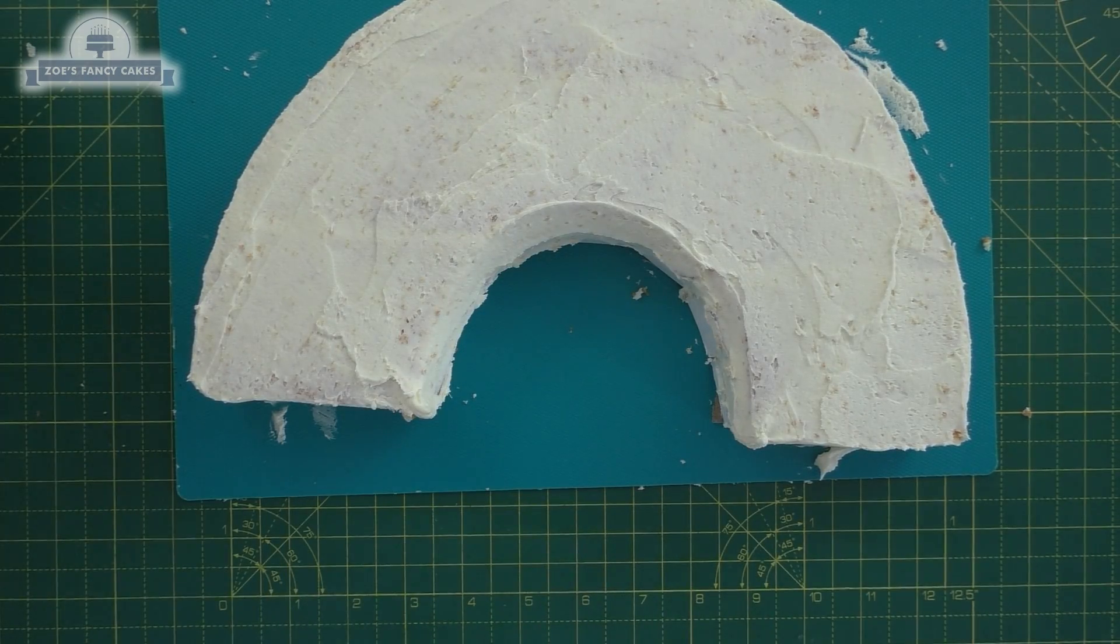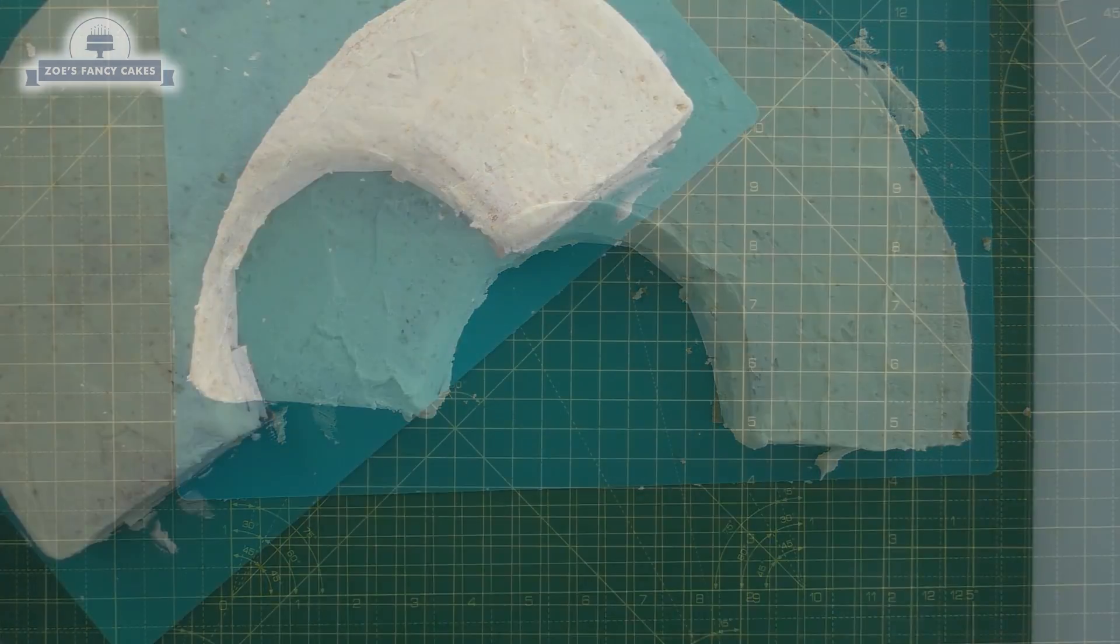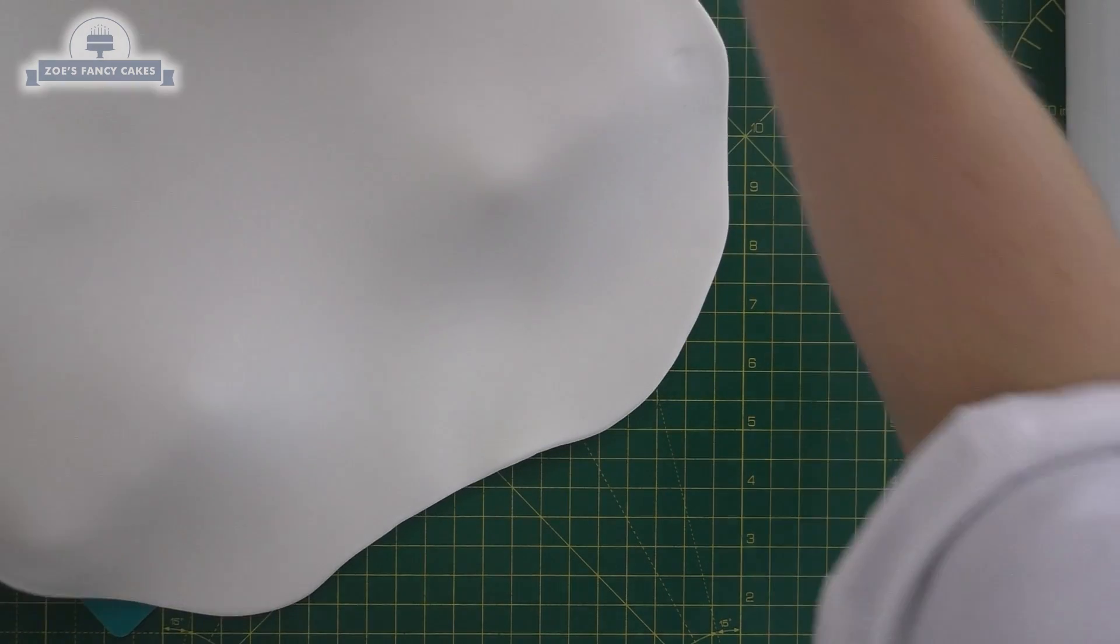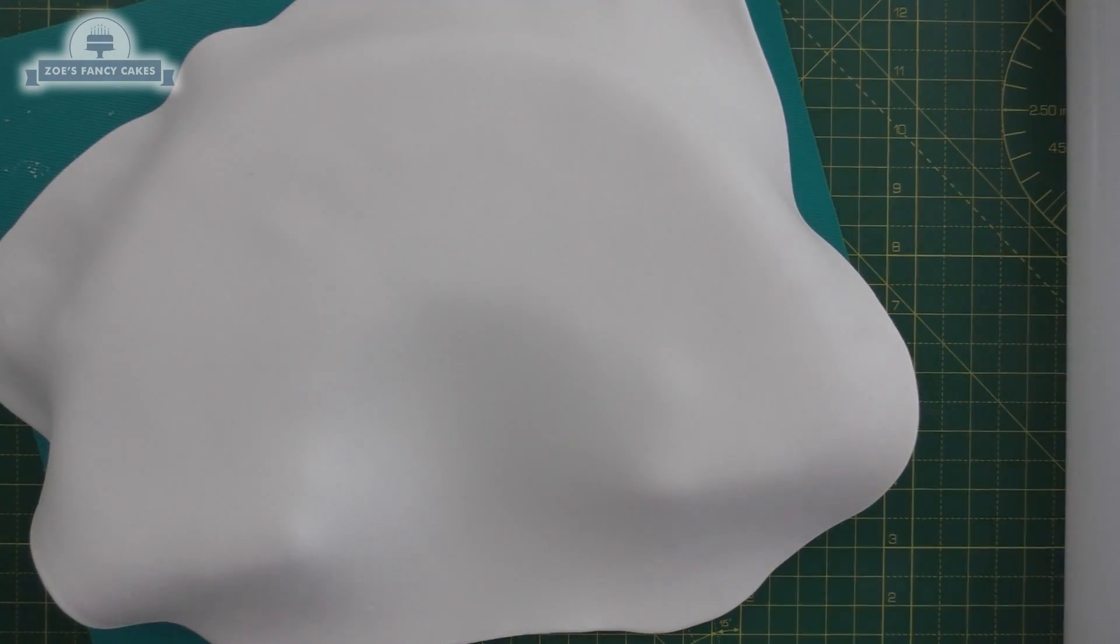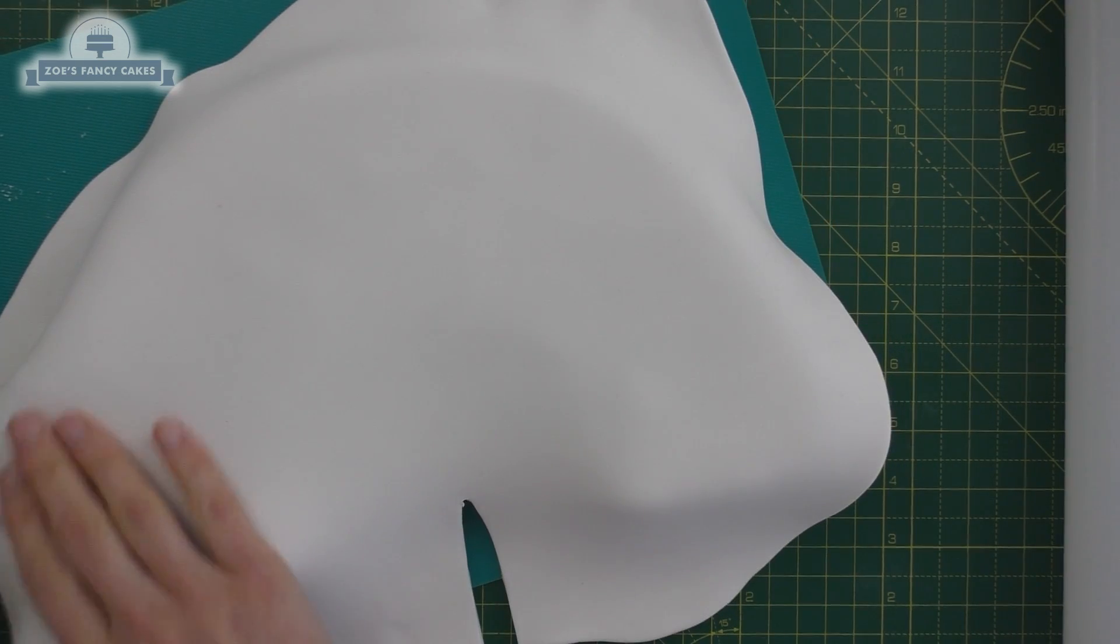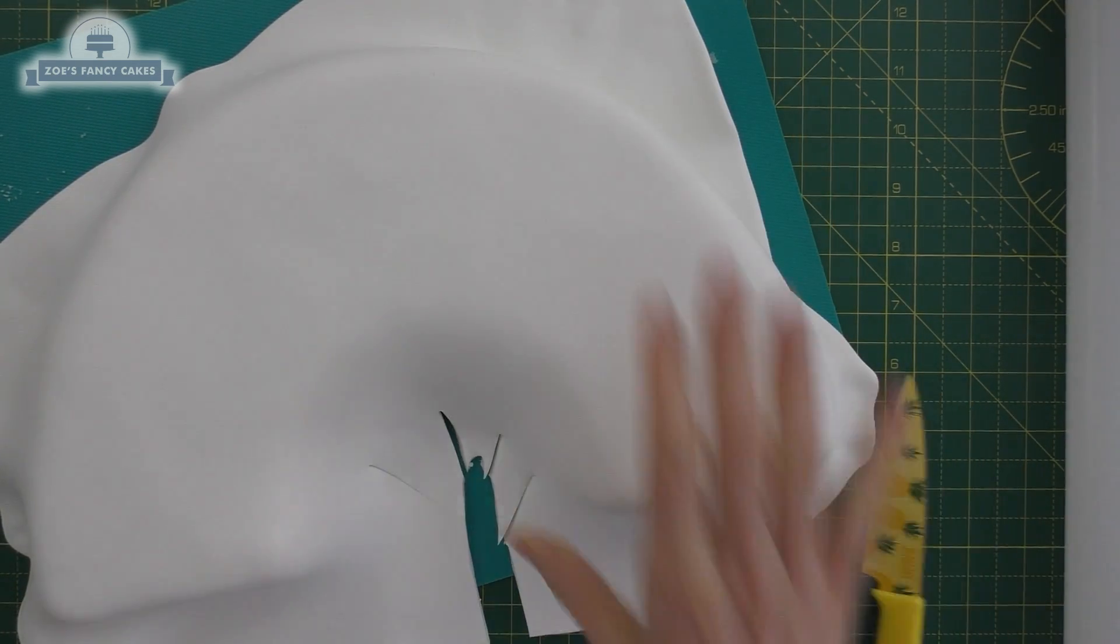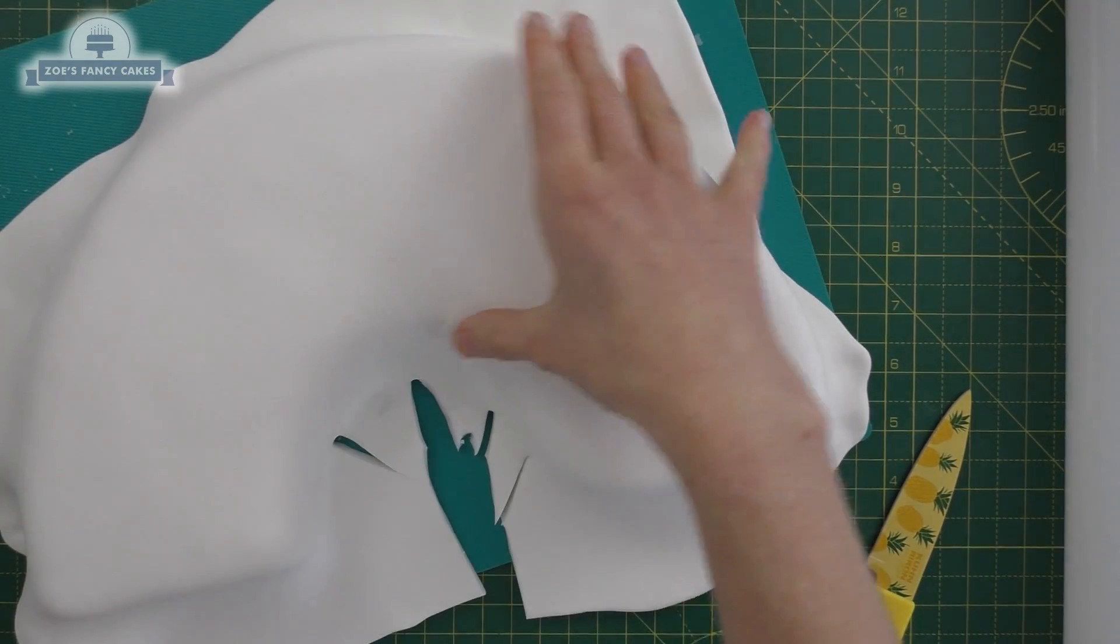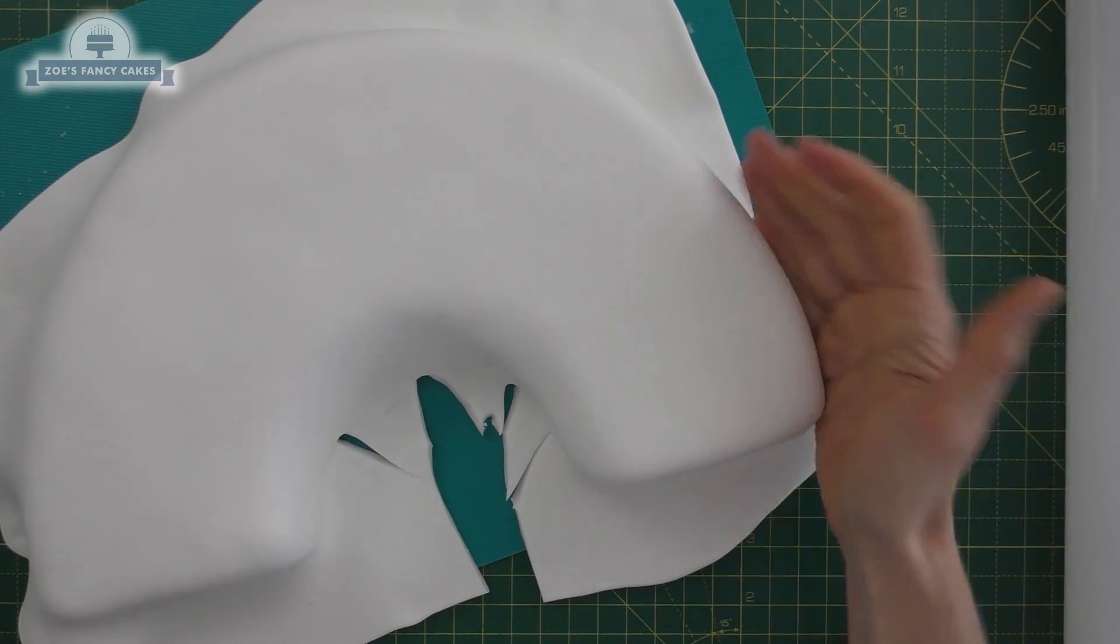Smooth it off the best you can, and then I'm going to cover it in a layer of white fondant. I've used Renshaw's extra for this one, but I'm going to put links in the description box below the video to everything that I've used. Just going to put some cuts, can you see, in the bottom of the white just so that it pushes into that little archway without tearing too much.